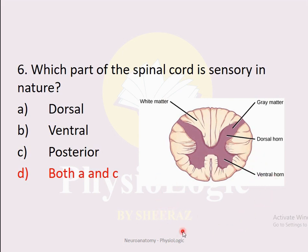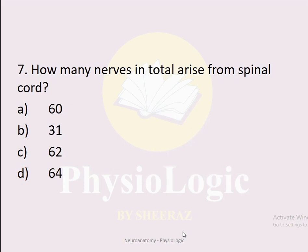Dorsal and posterior are the same words. The dorsal or posterior portion of the spinal cord is sensory, and the ventral or anterior portion is motor. MCQ number seven: How many nerves in total arise from the spinal cord? Option A: 60. Option B: 31. Option C: 62. Option D: 64. The correct option is C: 62.